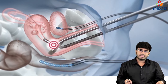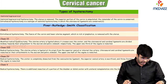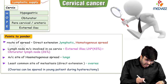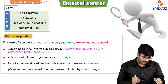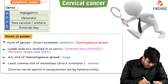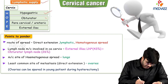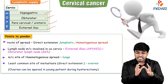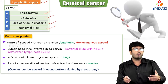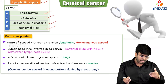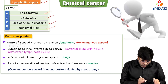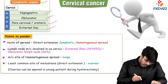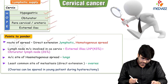Now some miscellaneous important points. The lymphatic supply of the cervix drains into HOPE lymph nodes: Hypogastric, Obturator, Paracervical, and External iliac lymph nodes. The routes of spread of cancer cervix are: direct extension, lymphatic, and hematogenous. The most common route of spread is direct extension.